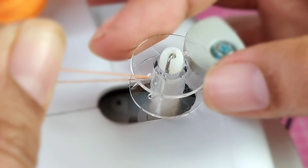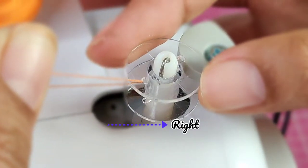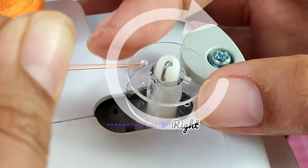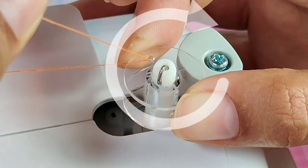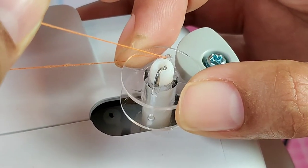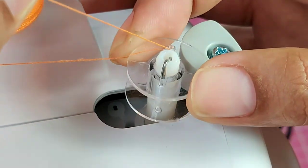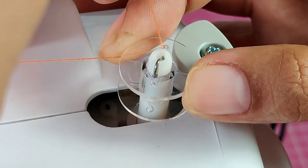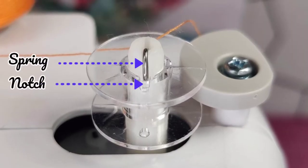The next step is a step that I always forget to do since I feel the bobbin is already very secure. Once the bobbin winder shaft is pushed to the right, twist the bobbin in a clockwise direction until the spring of the shaft is locked in place at the notch of the bobbin. This should hold your bobbin securely in place.